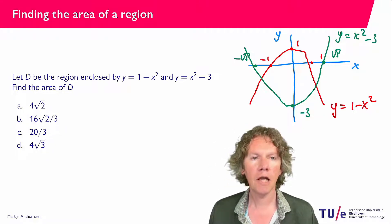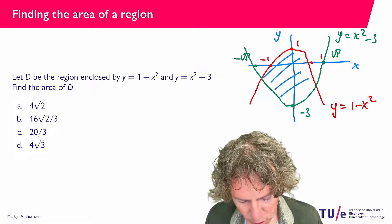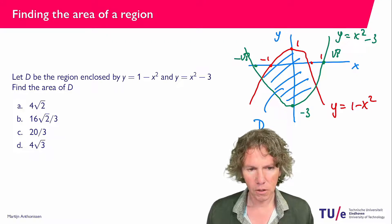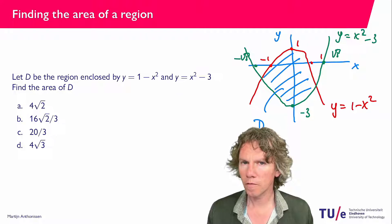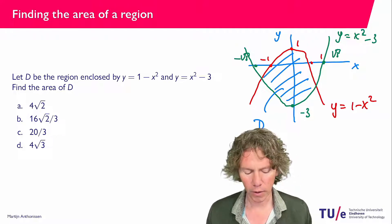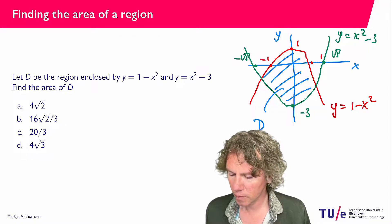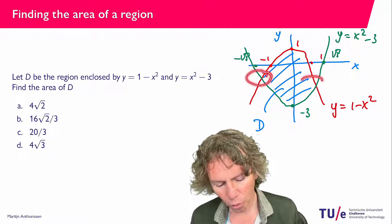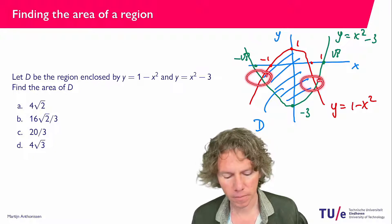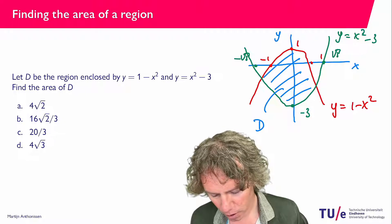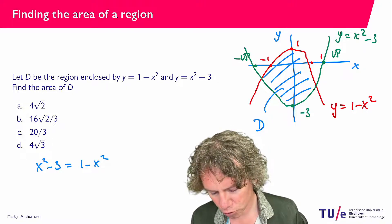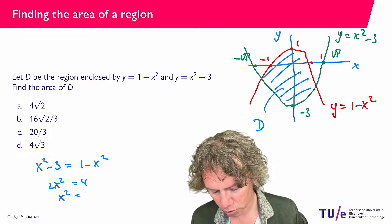The area in between these two curves — the dashed area here — is D, and we need to find the area of D. Pause the video and try to find this yourself. To find the intersection, we set x squared minus 3 equal to 1 minus x squared, which gives 2x squared equals 4, so x squared equals 2, and x equals plus or minus the square root of 2.